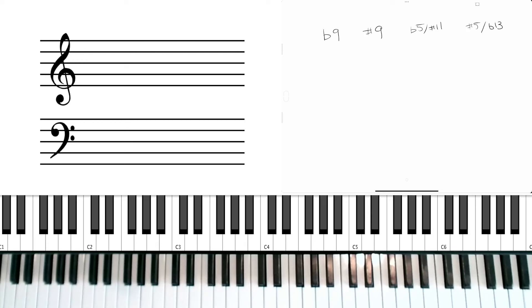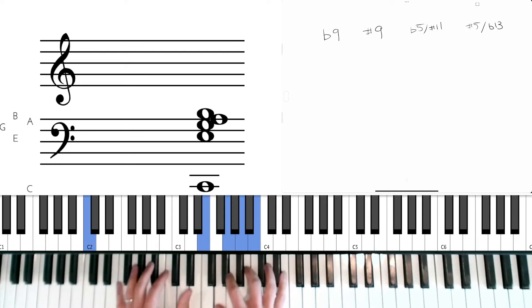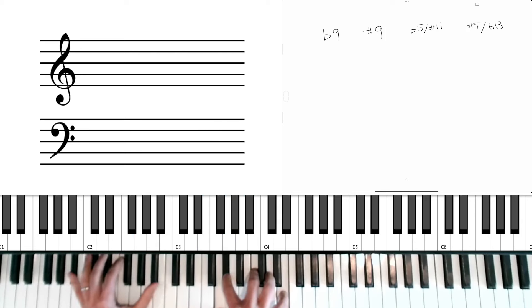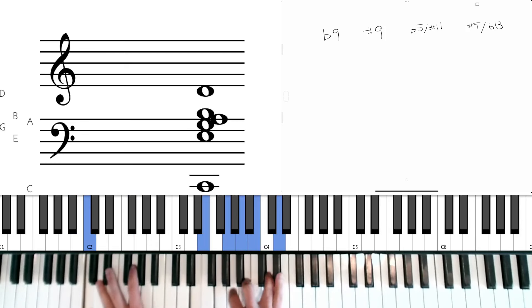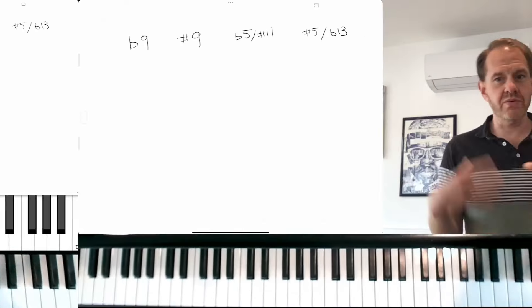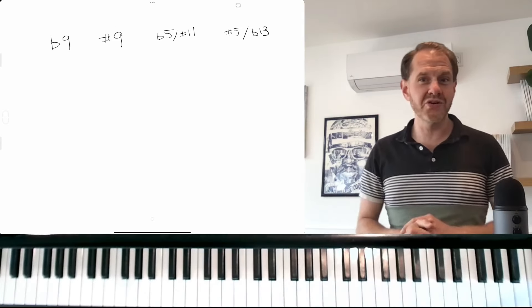Another place where we really typically use the sharp 11 is in what we call a backdoor 251. So coming back to C, the backdoor 251 would be F minor to Bb7 to C major. And in that Bb7, that sharp 11, E natural in this case, would be a very common addition. All right, so that's a real crash course in three of these four different altered tones.